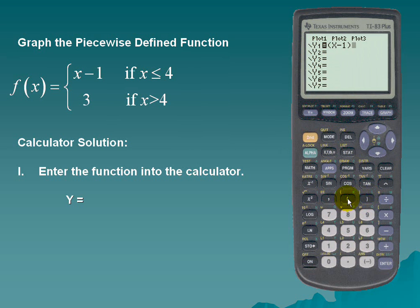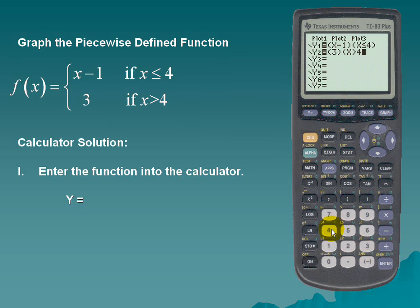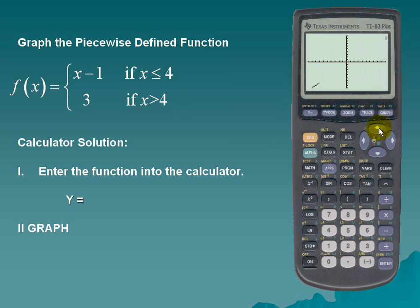Close the parentheses. Our condition for x is also in a set of parentheses. In Y2 we'll enter the second piece of our function — 3 — with x greater than 4, and close the parentheses. Before graphing, remember we must change the mode from connected mode to dot mode. And now we shall graph. Here is the piecewise defined function.